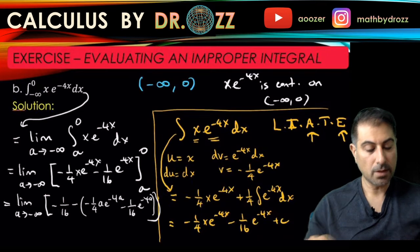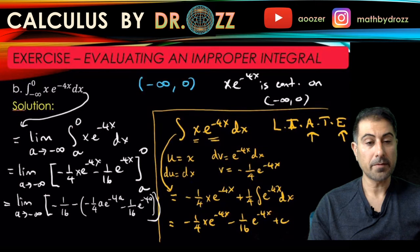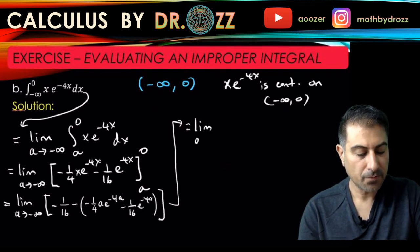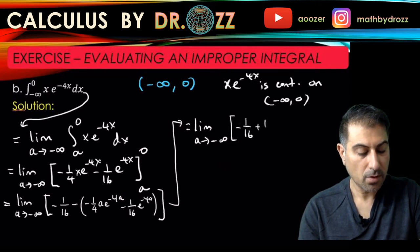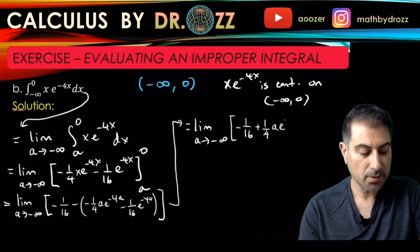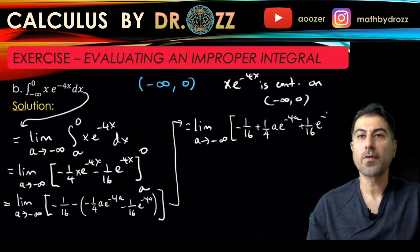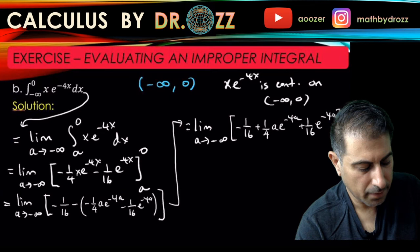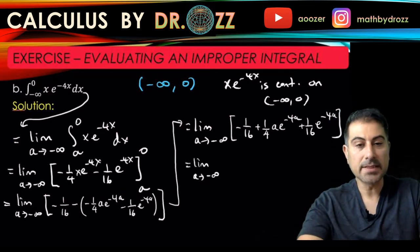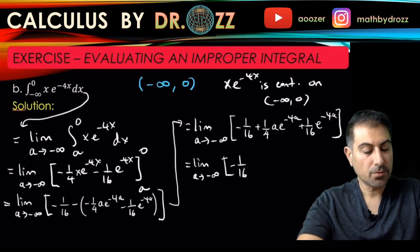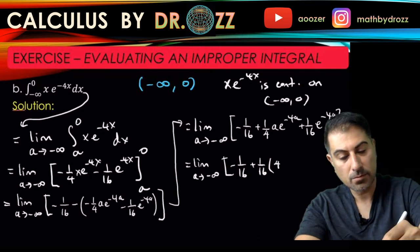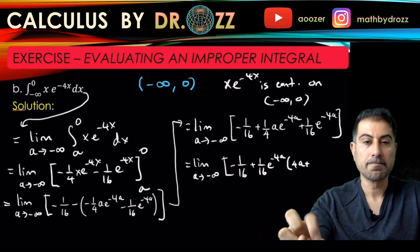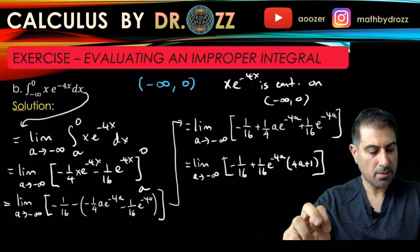Let's simplify. After handling all the signs, we get −(1/16) + (1/4)·a·e^(−4a) + (1/16)·e^(−4a). Factoring out (1/16)·e^(−4a) from the a-dependent terms, we get −(1/16) + (1/16)·e^(−4a)·(4a + 1).